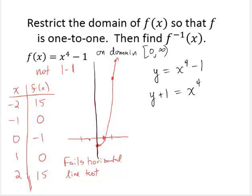Now, I have to take the fourth root. But remember, when we take the fourth root of both sides of an equation, we invoke a plus or minus. So I'd have to have plus or minus fourth root of y plus 1 equals x. And so now here's where there's a problem. We can't have a plus and minus, because then we can't write a function.